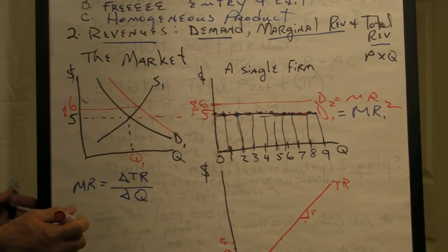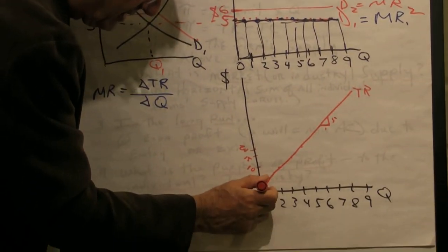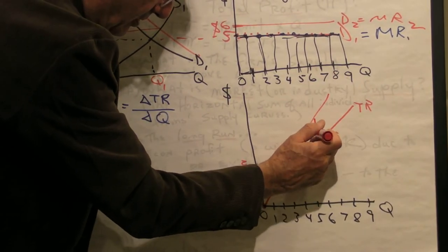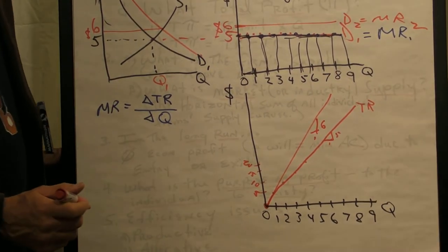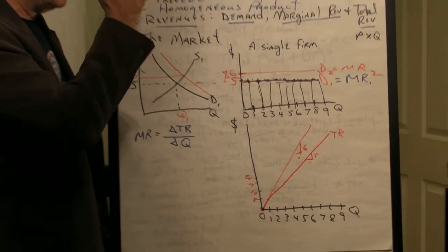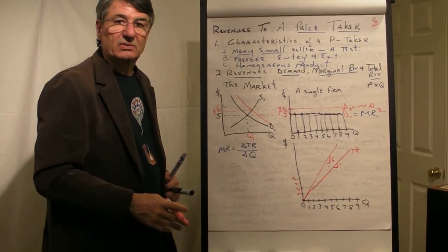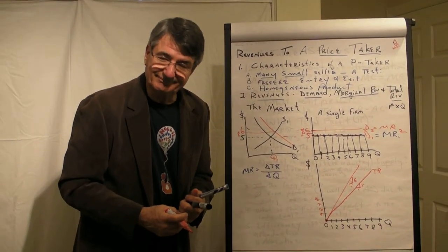And what about the total revenue? It starts at zero, but now has a slope of six dollars instead of five. So that's demand, marginal revenue, and total revenue to a price taker. Out.